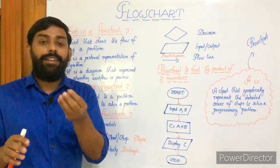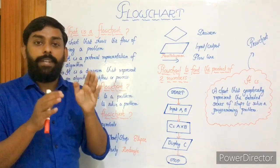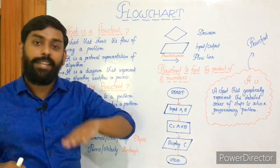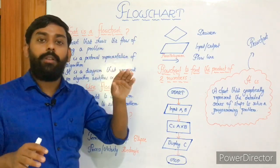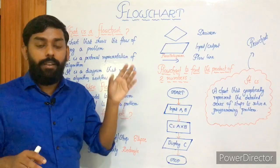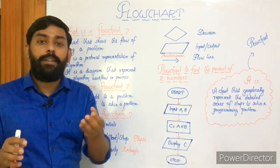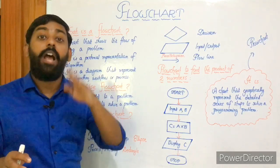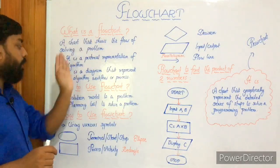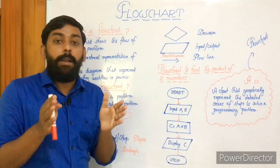In algorithm, we have seen it is step by step instructions written in English to solve a programming problem — for example, adding two numbers: start, input A and B, then C equals A plus B, then display C, then stop. That's in textual format. But flowchart is in diagrammatic or graphical representation, using graphic symbols to represent step by step instructions to solve a problem. We'll see an example of constructing a flowchart for multiplying two numbers.